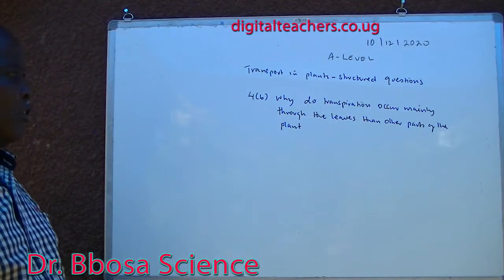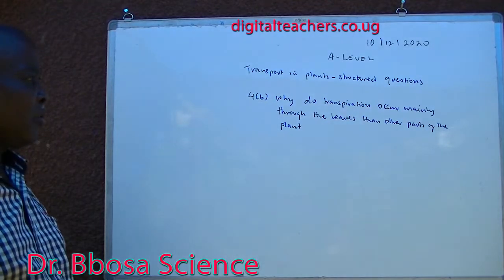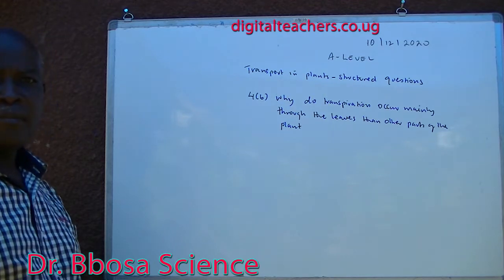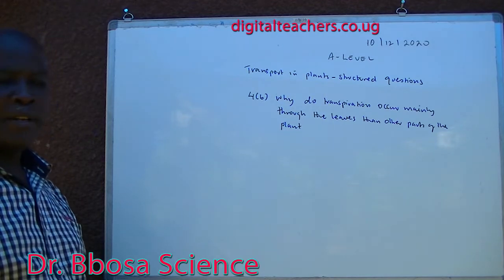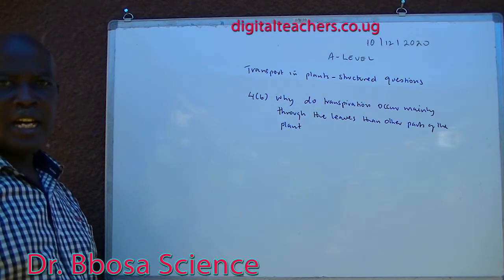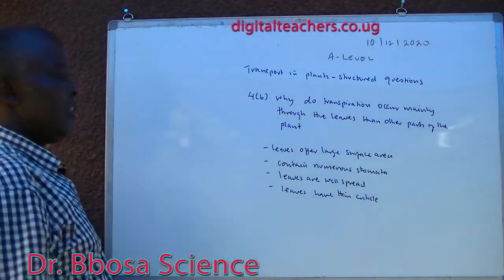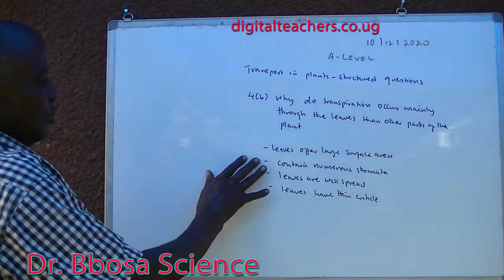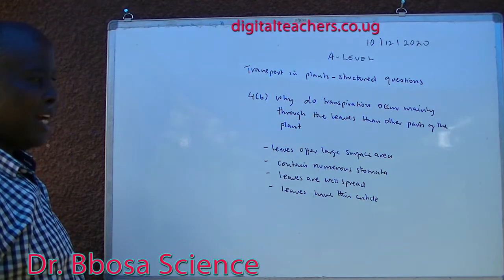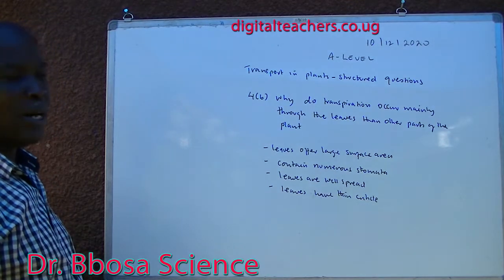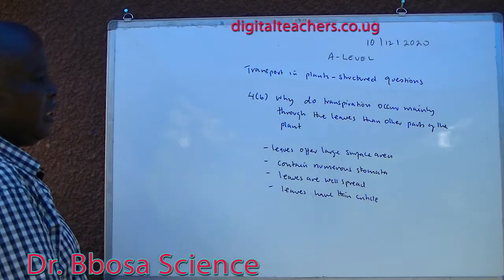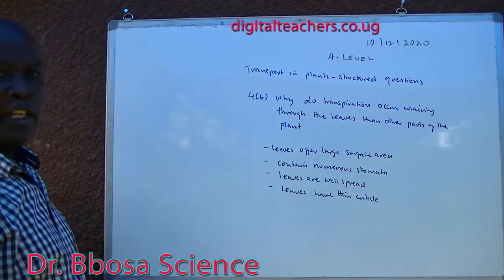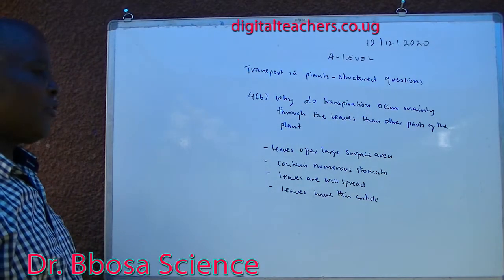B: why does transpiration occur mainly through leaves than other parts of the plant? You can pause and answer. One, leaves have a large overall surface area. Two, leaves contain numerous stomata. Three, leaves are well spread. Four, leaves have thin.